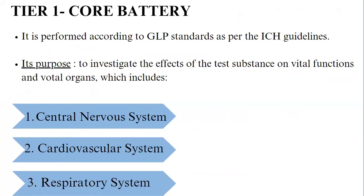The core battery: the purpose of the safety pharmacology core battery study is to investigate the effect of a test substance on vital functions of vital organs, which includes the central nervous system, cardiovascular system, and respiratory system. These are considered vital organ systems that should be studied in the core battery — to evaluate the effect of a drug on the cardiovascular system, respiratory system, and central nervous system.